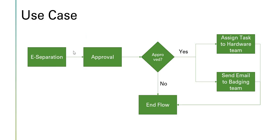In the use case we would be creating a catalog item for eSeparation. This is a request created when somebody wants to leave the organization. The approval will go to the manager, and if the manager approves, we would initiate a parallel flow — assigning a task to the hardware team to take back hardware assets, and sending an email to the badging team to take their badge. These two tasks would fire in parallel with no dependency on each other, and as soon as both are completed we would end the flow.